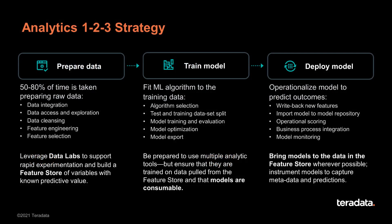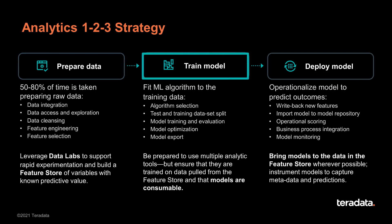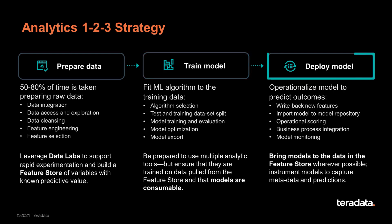Let's have a quick look at the Analytics 1-2-3 strategy itself. We basically split the whole complex end-to-end pipeline of machine learning model creation into three parts. Number one is data preparation — the data wrangling we talked about before. Number two is model training. And number three is model deployment, which covers scoring, inference, and all the model management that goes around that.